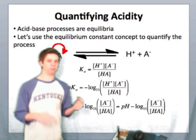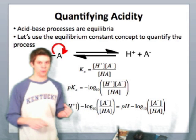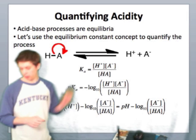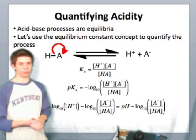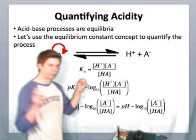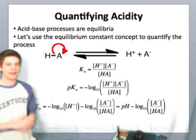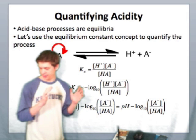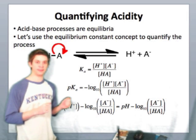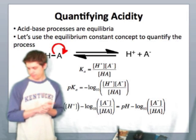Now, if we take the negative log of both sides of that, we get the expression shown below. So taking the negative log of both sides, that's called the p operation. That's why Ka transforms into pKa. And that's why I've essentially taken everything here and taken the negative log of it.